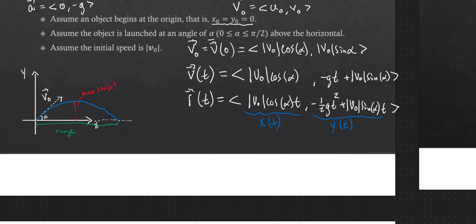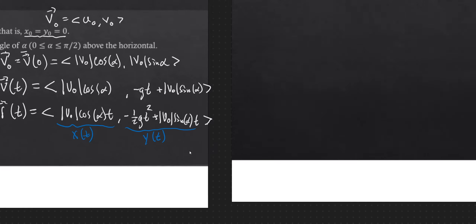Now let's find time of flight, range, and max height. We find range by first finding the time of flight — how long it takes to go from start to end. Time of flight is when y of t equals zero, which gives two solutions: one should be zero and the other should be the time of flight.